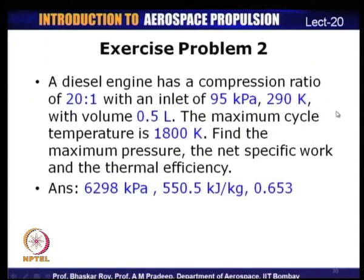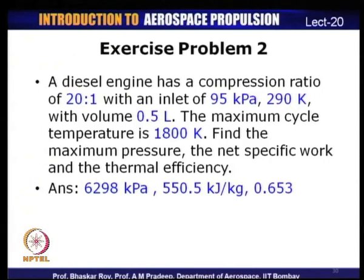Exercise 2 (Diesel cycle): A diesel engine has compression ratio 20:1 with inlet temperature 290 K, pressure 95 kPa, and volume 0.5 liters. Maximum cycle temperature is 1800 K. Find maximum pressure, net specific work, and thermal efficiency. Answers: maximum pressure = 6298 kPa, specific work = 550.5 kJ/kg, thermal efficiency = 0.653.